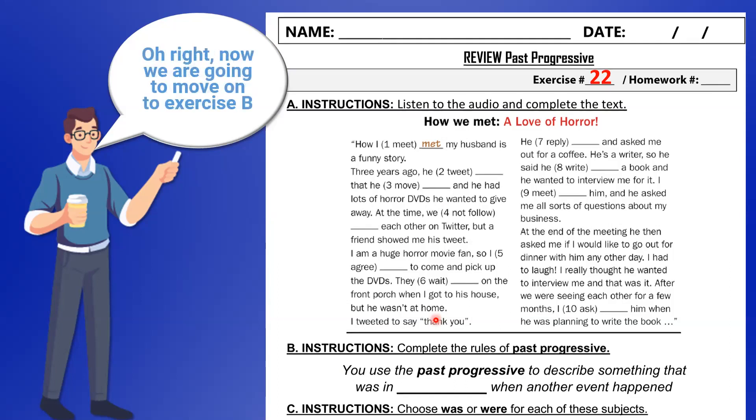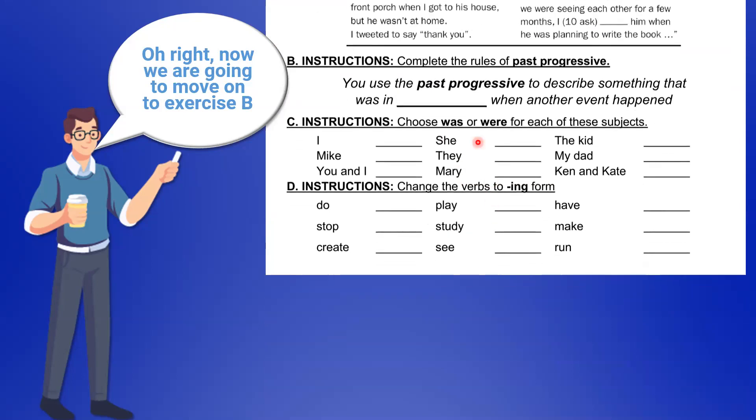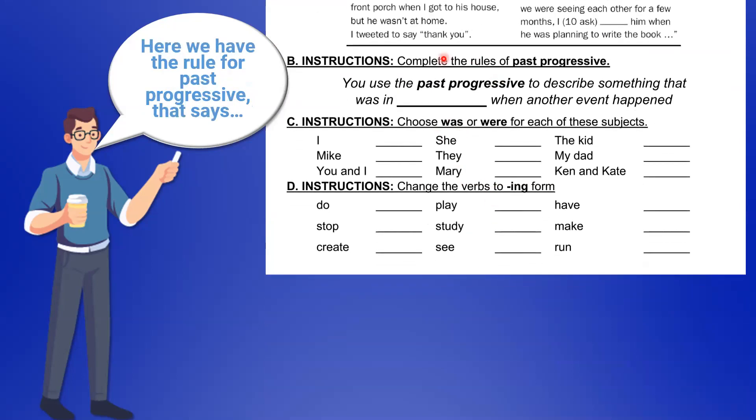All right, now we're going to move on to exercise B. Here, we have the rules of past progressive that says: you use the past progressive to describe something that was in [blank] when another event happened.